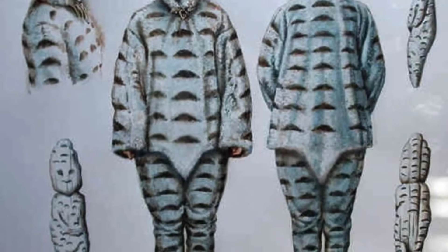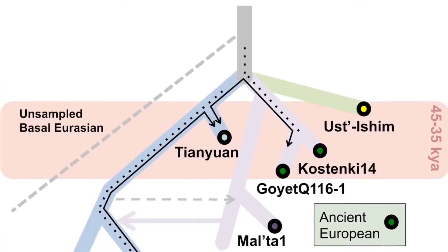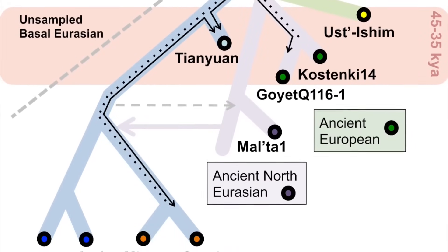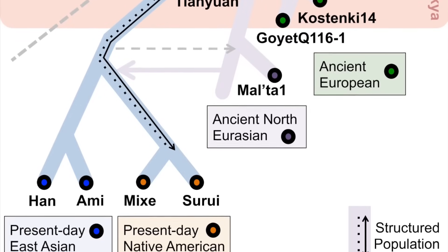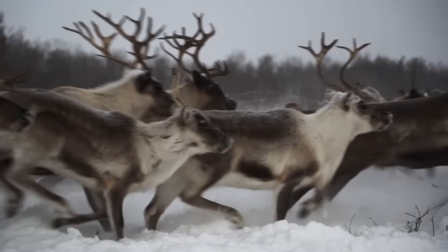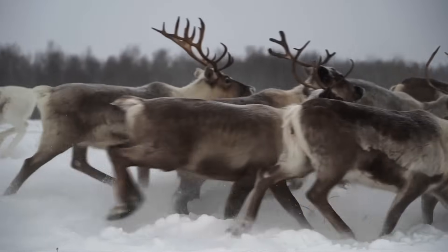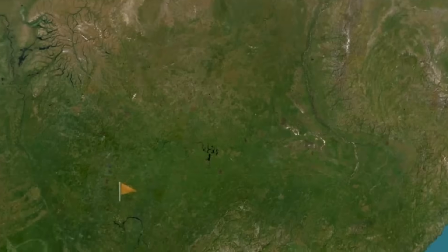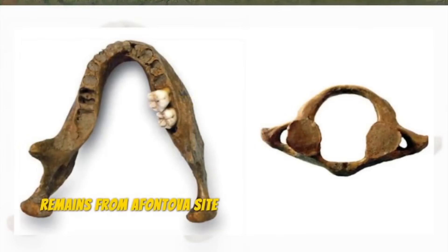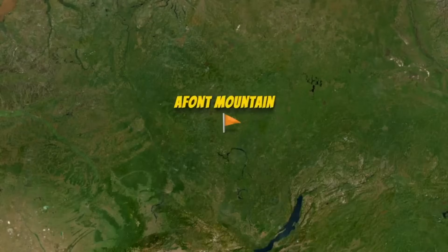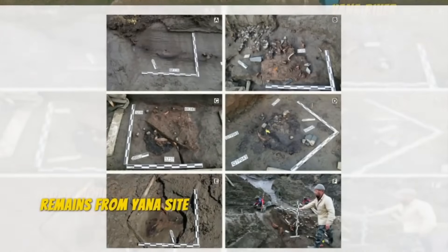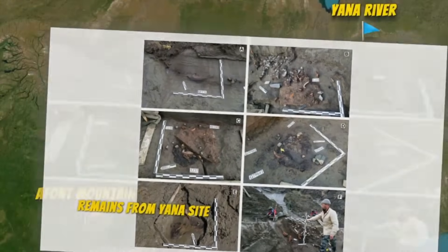Genomic analyses demonstrate that ancient North Eurasian populations diverged from Western Eurasians approximately 38,000 to 45,000 years ago, but remained genetically distinct from both European and East Asian populations. They inhabited a vast territory across northern Eurasia during the Upper Paleolithic, adapting to extreme cold environments. Additional ancient North Eurasian-related individuals have since been identified, including the Afontova-Gora individuals from Siberia at approximately 17,000 years ago, and the Yana-RHS site individuals at approximately 31,600 years ago, helping reconstruct this population's geographic and temporal range.